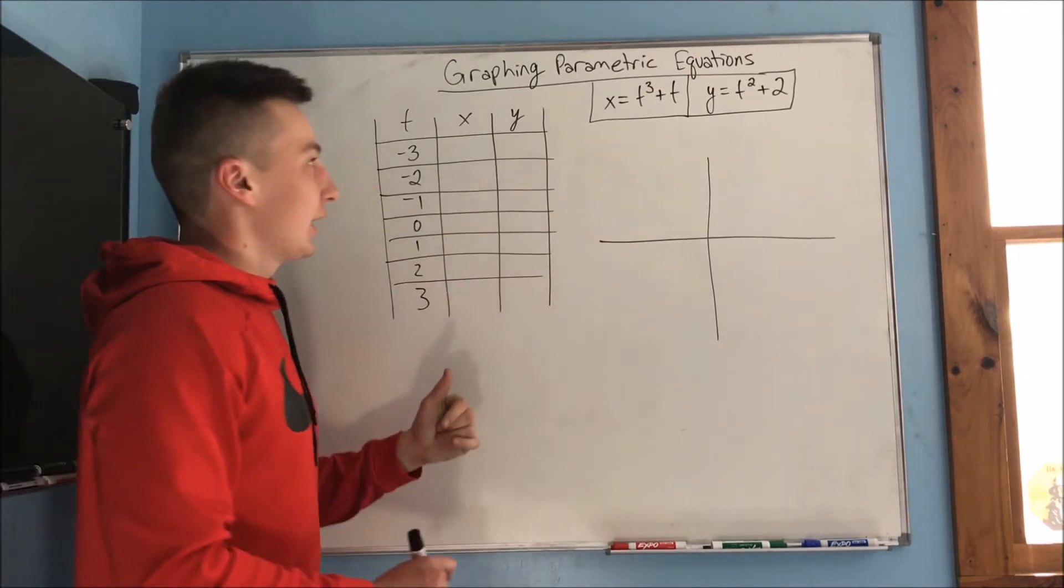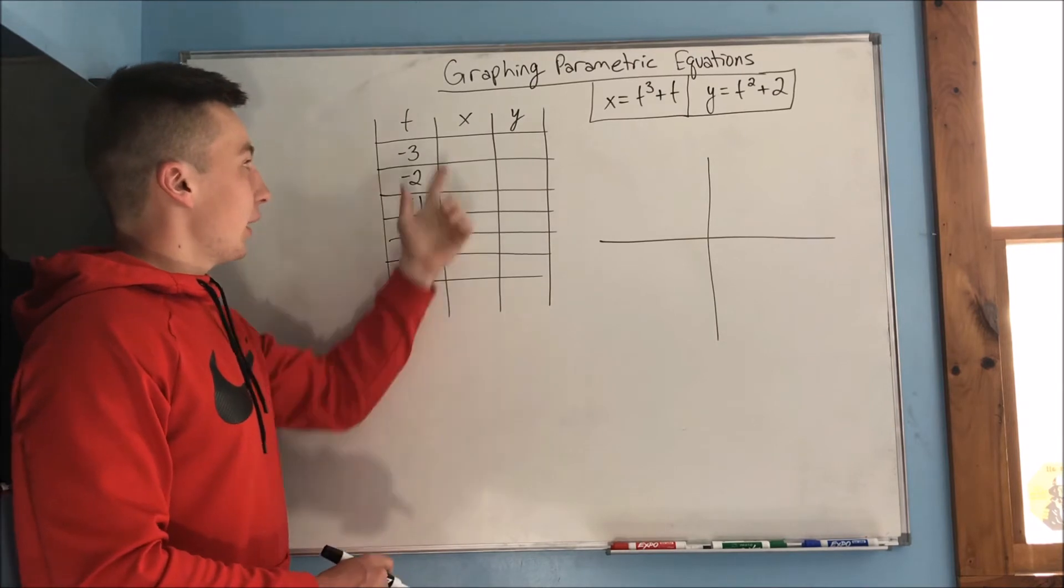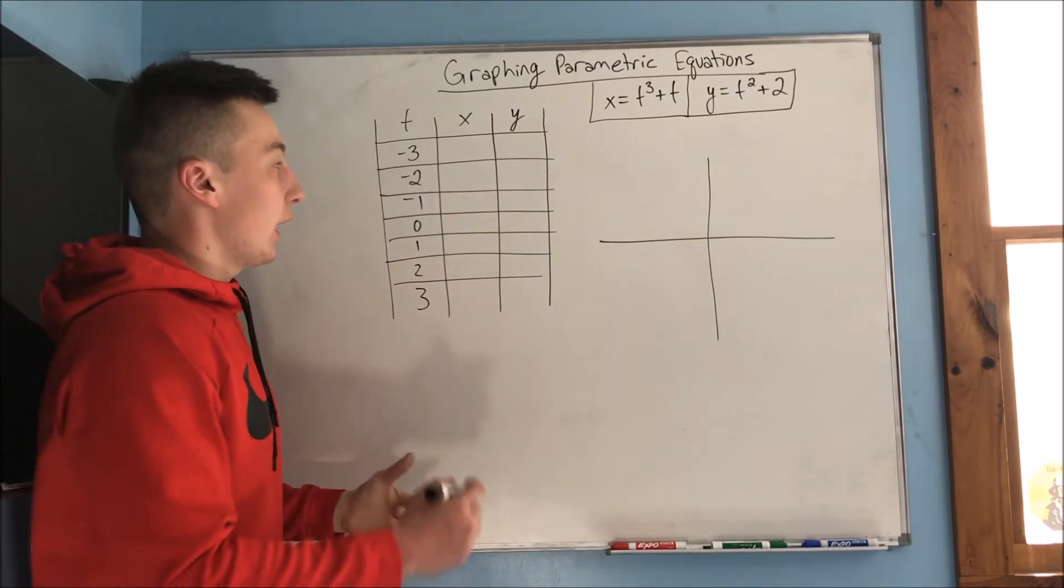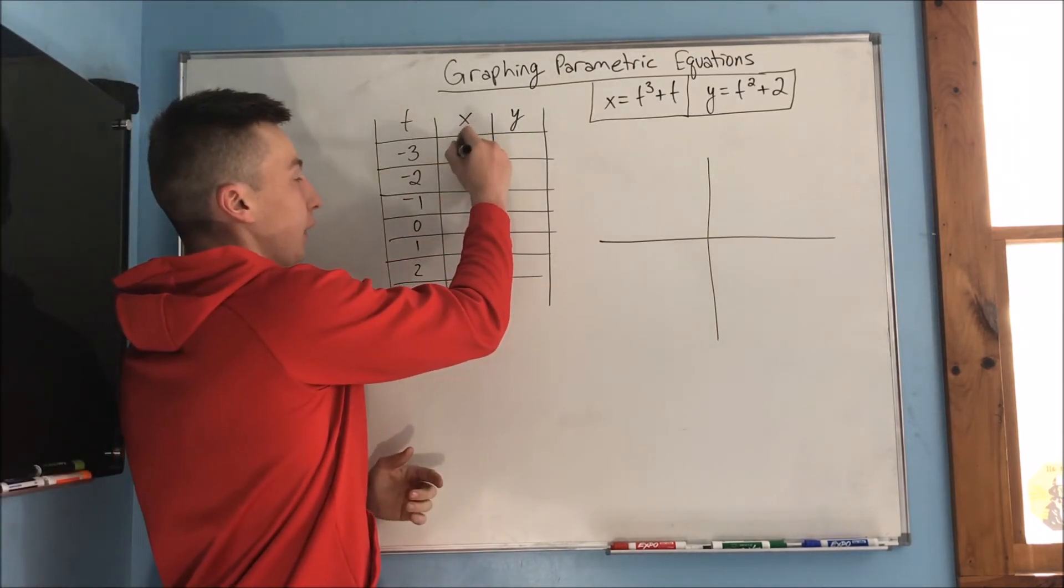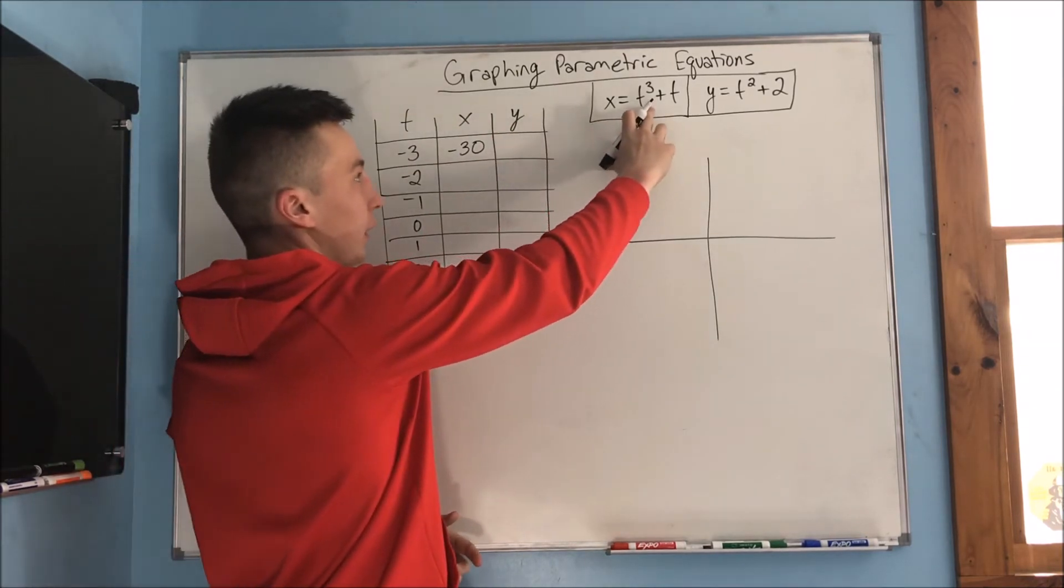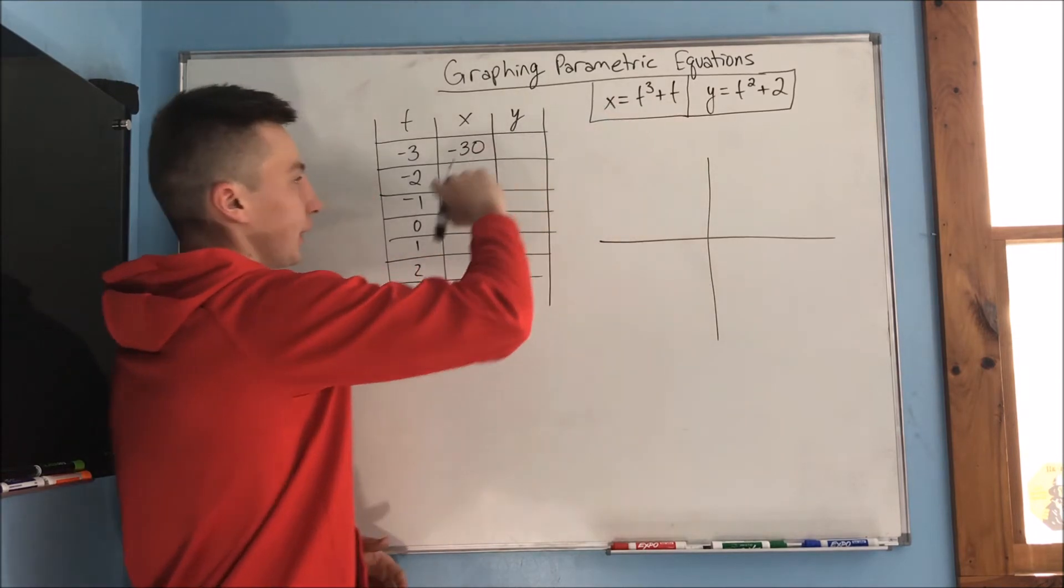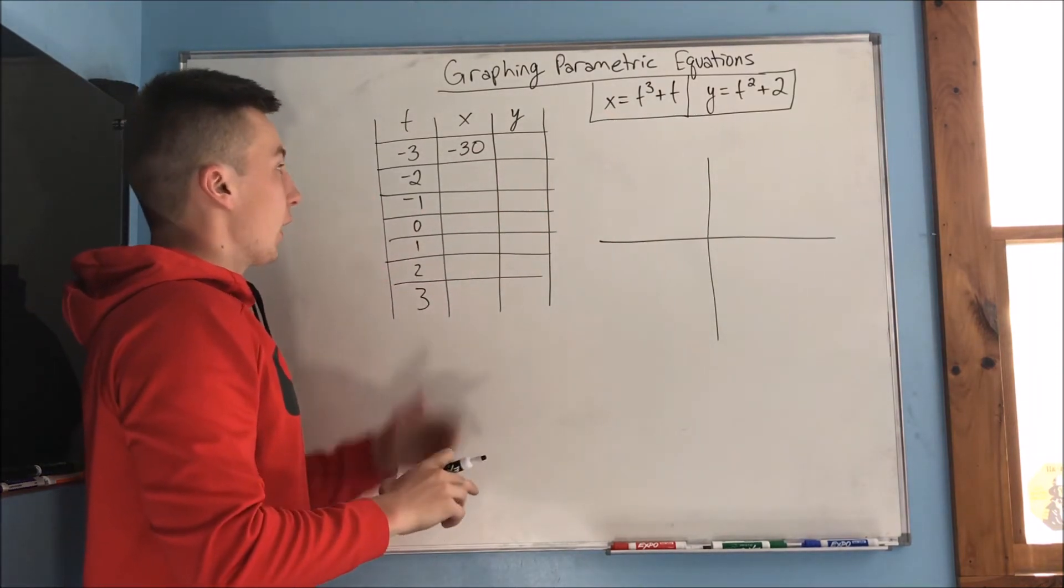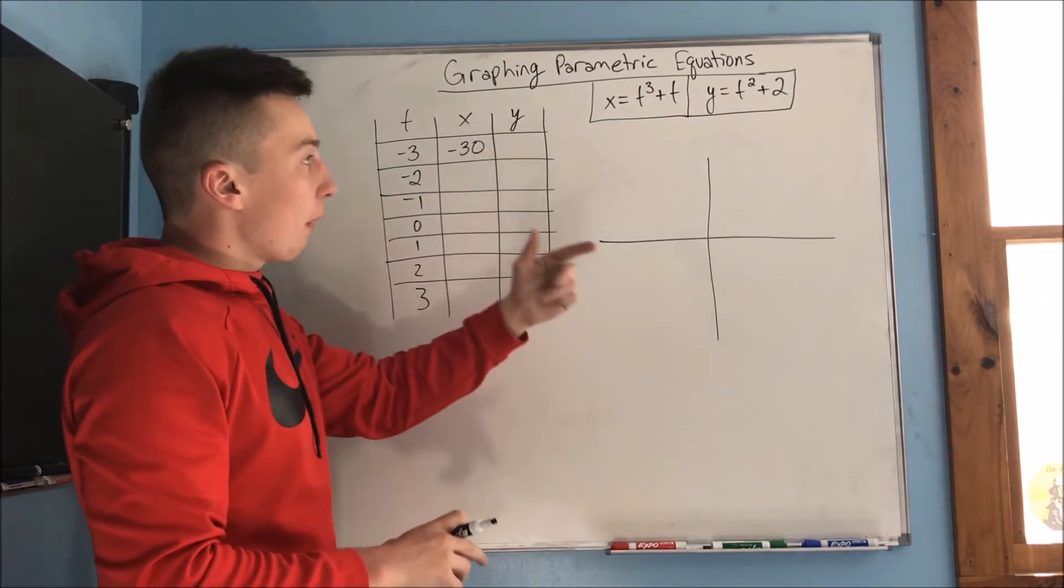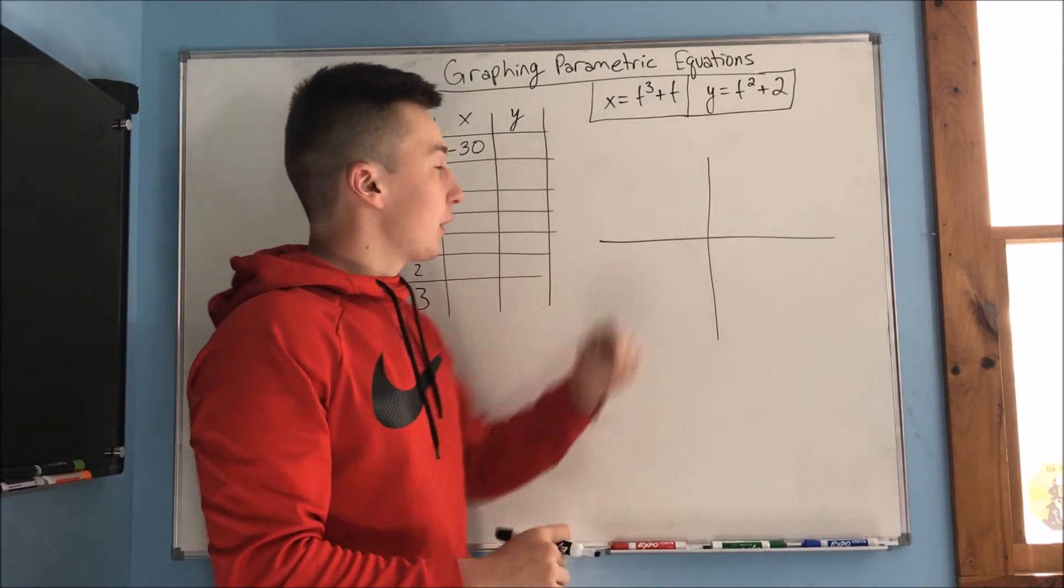Now, we have x equal to t cubed plus t. So we're going to have a negative 30 here, because negative 3, we have that cube, that's 27. Well, negative 27. Then we're going to have minus 3, which gives us negative 30. Now, what about for y? Well, that's just going to be 9 plus 2, so that's 11.